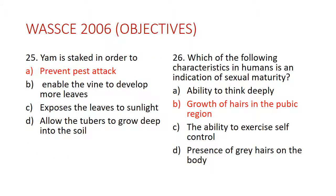Question 25: The arm is staked in order to — the answer is to prevent pest attack. Staking supports plants with weak stems so they can grow erect. For example, with yam, you prevent the leaves from staying on the ground and getting exposed to pests that live in the soil. So by doing this, you prevent pest attack.